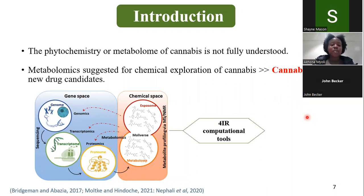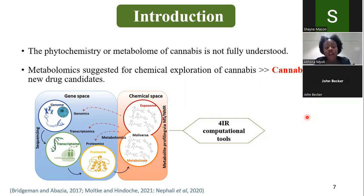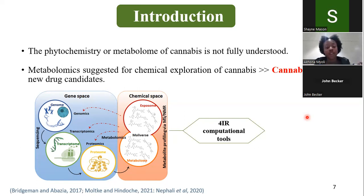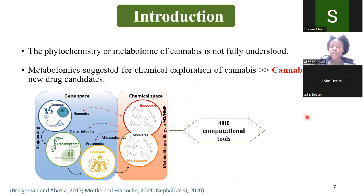Some of you might be asking why metabolomics amongst the other omics sciences. The answer is that metabolomics offers one of the biggest advantages in the sense that the use of its 4IR analytical and computational tools reveals the downstream information of gene expression and protein expression, meaning that the measured metabolites can be linked back to upstream information. In the realm of natural product research, that opens up a new array of opportunities and possibilities.